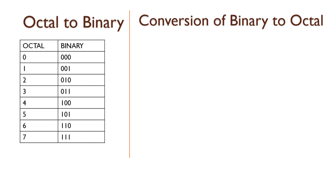Now let us calculate octal to binary, and also the conversion of binary to octal. The octal number system runs from 0 to 7. The octal digit 0 in binary is 000 — each octal digit maps to exactly three binary digits. The example number is 62.346 as an octal number. To convert to binary, we look up each octal digit's binary form.